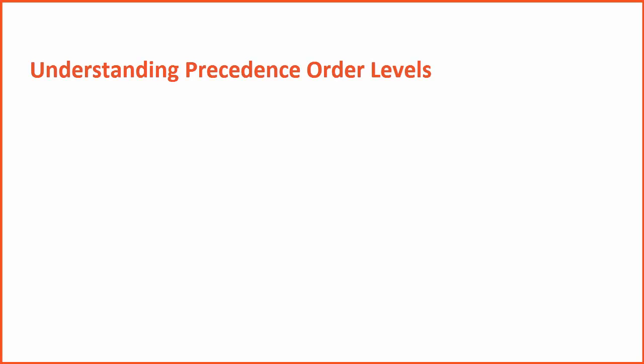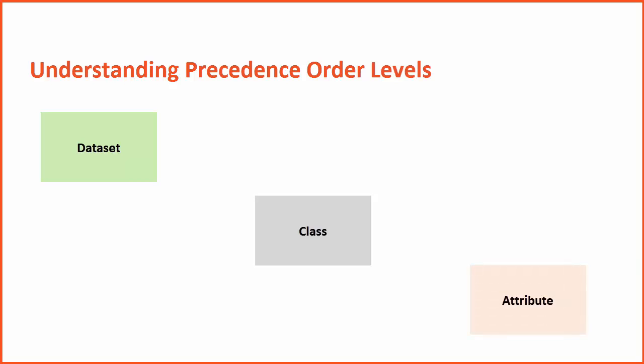Understanding Precedence Order Levels. Precedence order is defined at three levels: at the dataset level, at the class level, and at the attributes level. Precedence order defined at the dataset level gets inherited to the class level. Similarly, precedence order defined at the class level gets inherited at the attributes level.